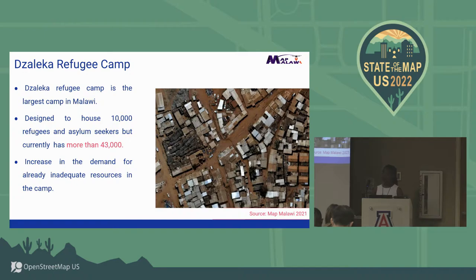The Dzaleka refugee camp is one of the biggest camps in Malawi. Ideally it was supposed to house about 10,000 people, but it has more than 43,000 people at the moment.